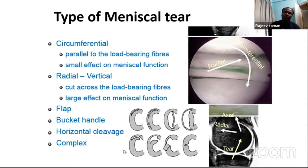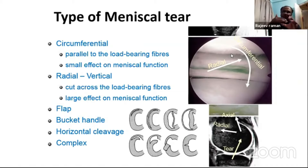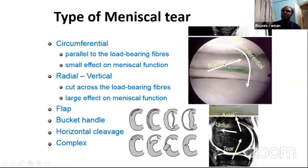Firstly, the circumferential tear, where the tear is parallel to the load-bearing fibres. Such tears are good for patients because they have very small effect on meniscus function. Most circumferential tears are asymptomatic. But the radial and vertical tear — if your tear is radial or vertical — it cuts across the load-bearing fibres.